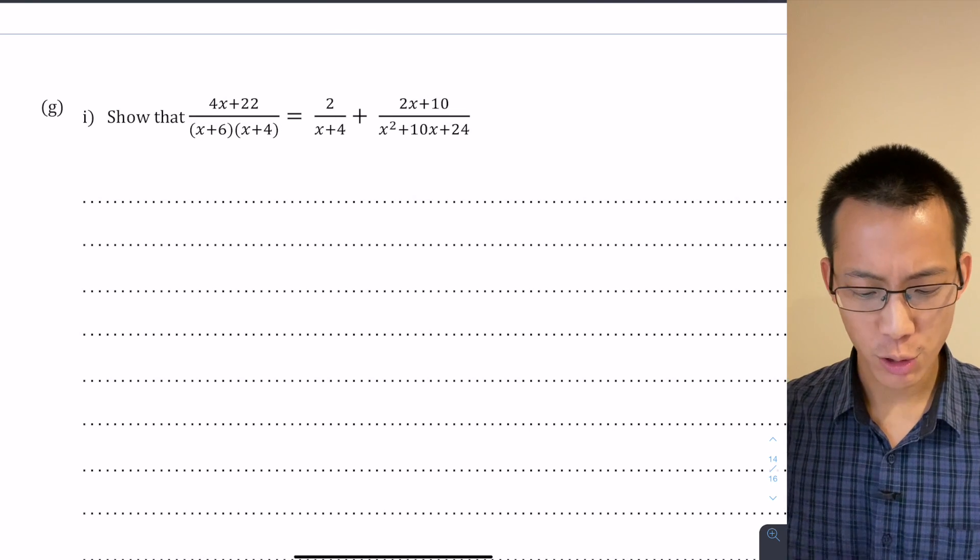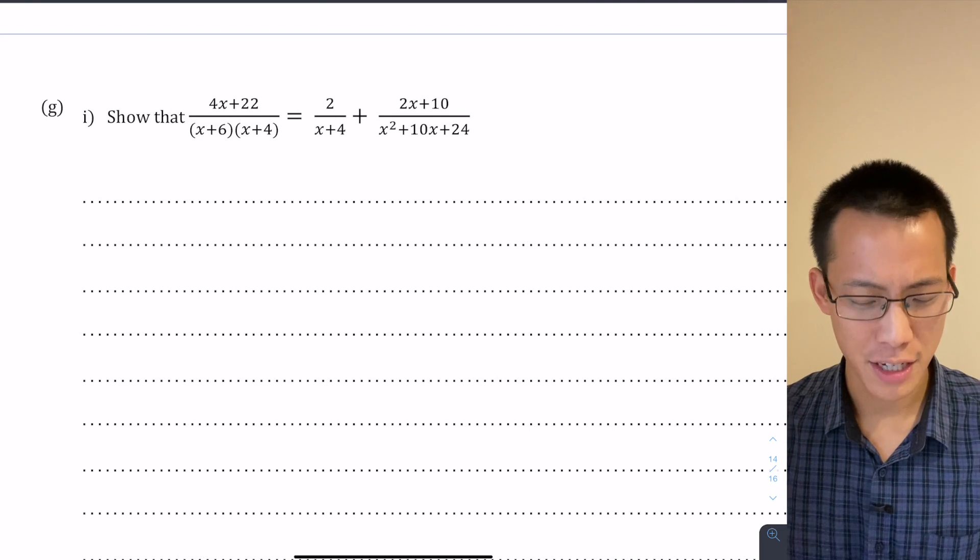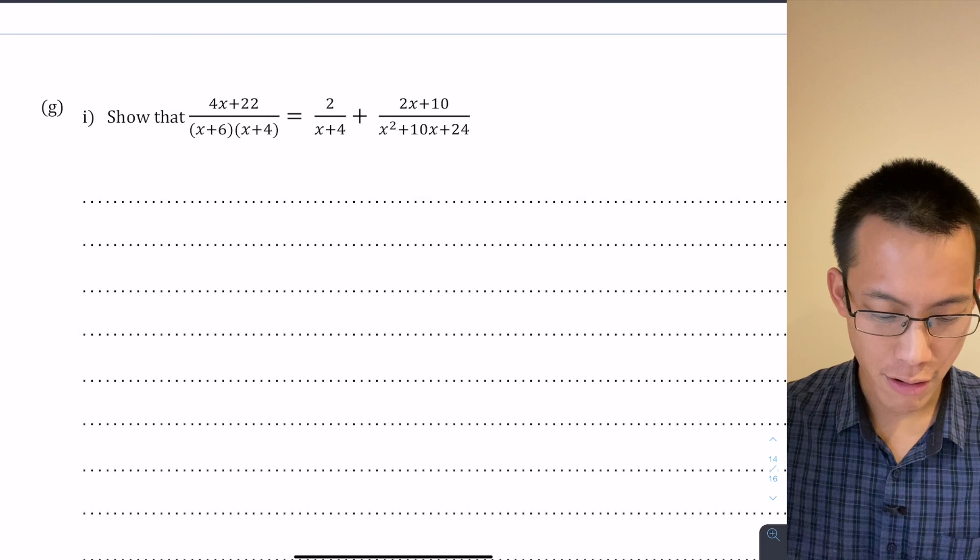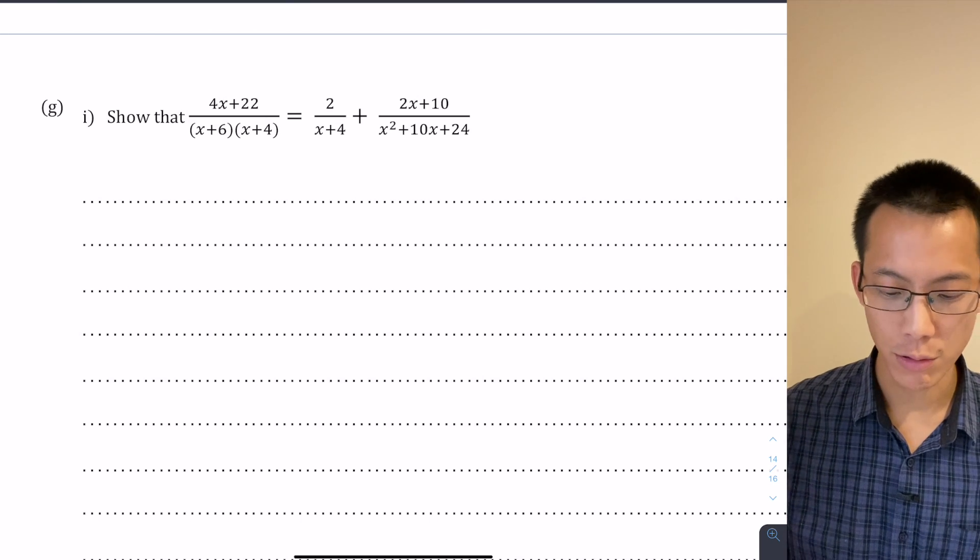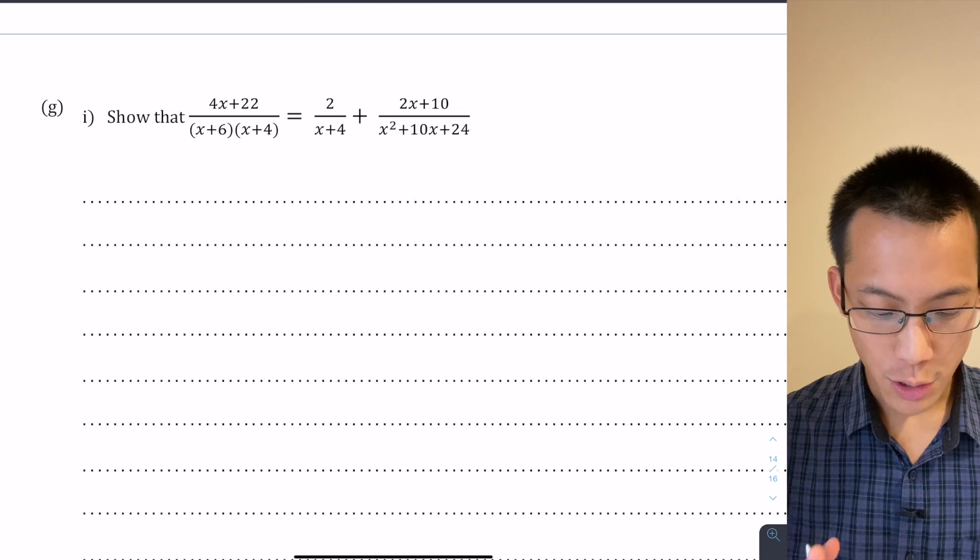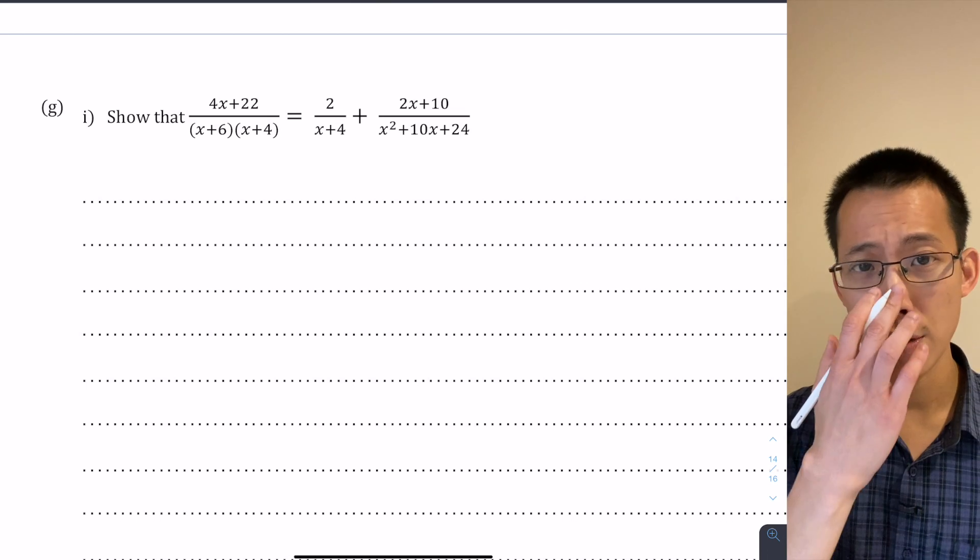Here's a problem that starts off looking like it has nothing to do with integration. It says show that 4x plus 22 over (x+6)(x+4) equals a pair of fractions on the right hand side. When you're asked to show a result, you need to start with one side, left or right, and then work with it to make it look like the other side.